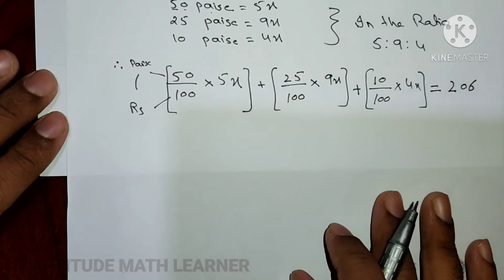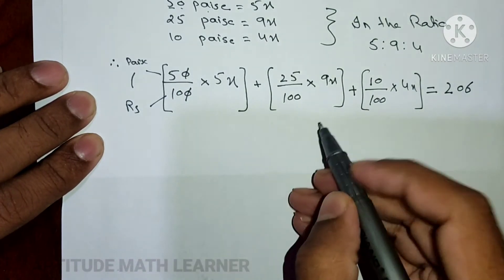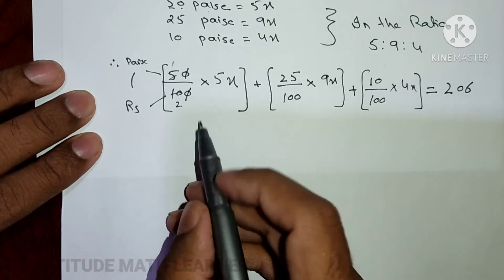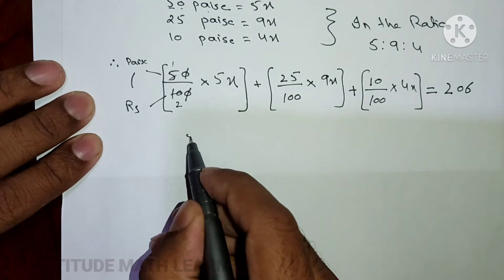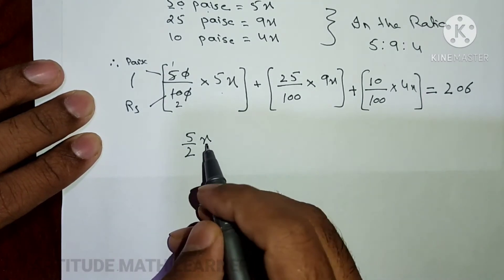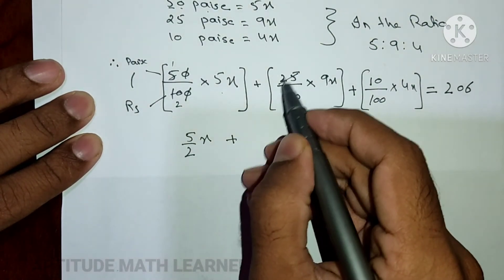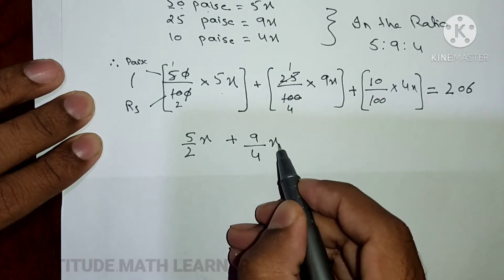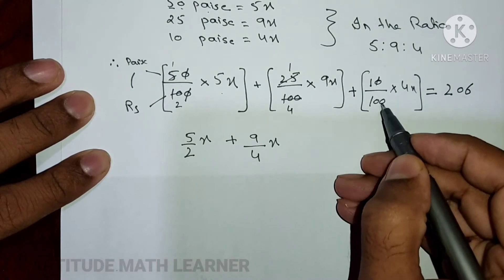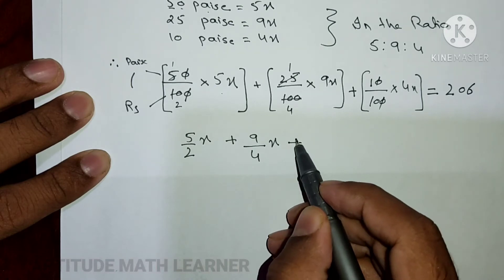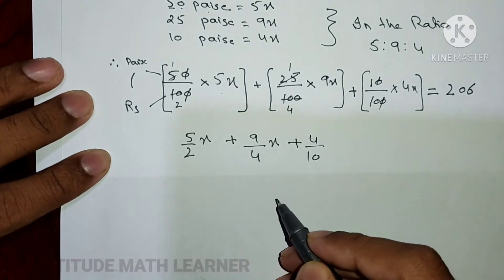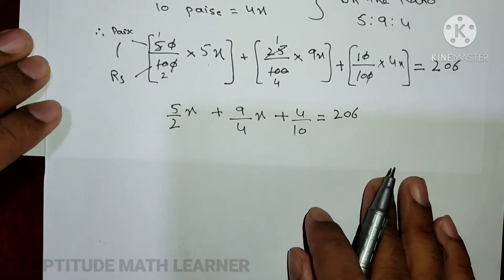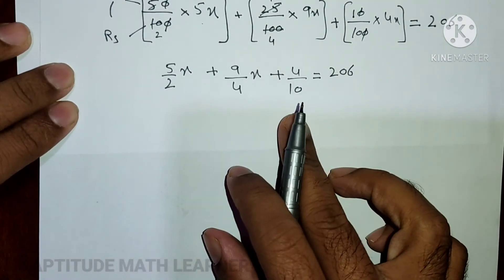Simplifying: zeros cancel. 50/100 × 5x becomes 5/2 x. Then 25/100 × 9x becomes 9/4 x. And 10/100 × 4x becomes 4/10 x. So we have 5/2 x + 9/4 x + 4/10 x = 206.